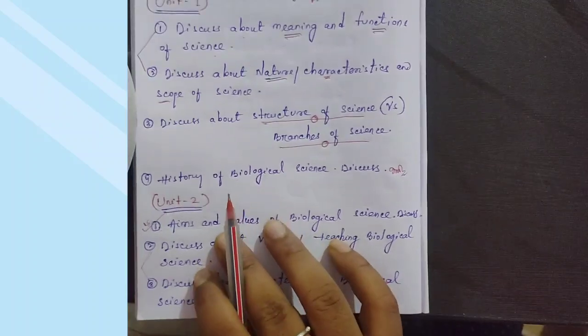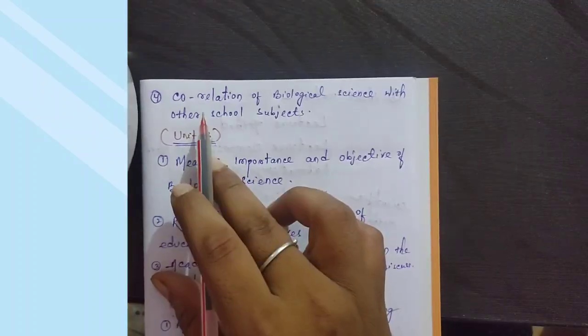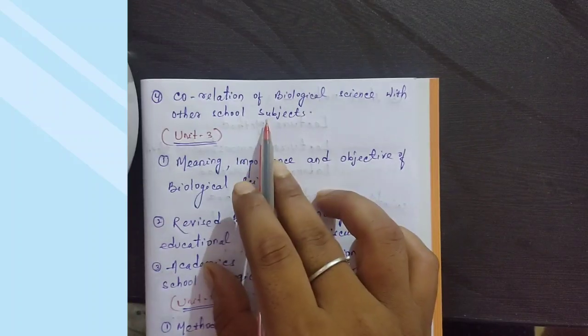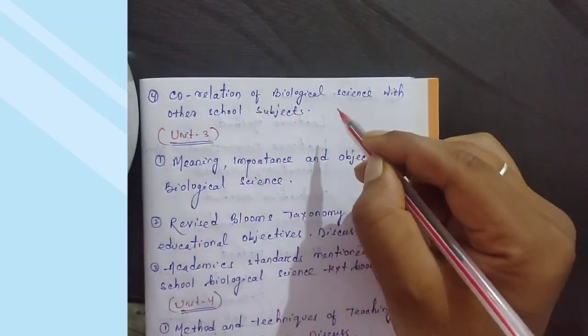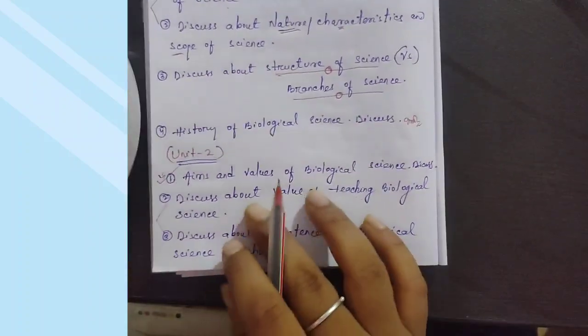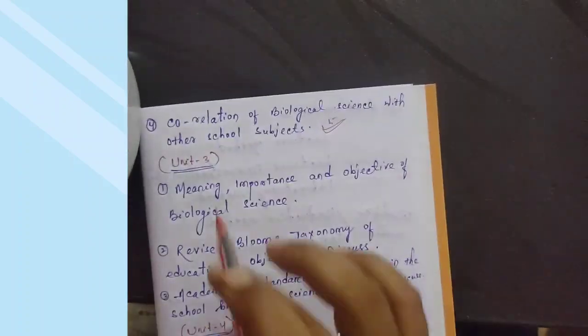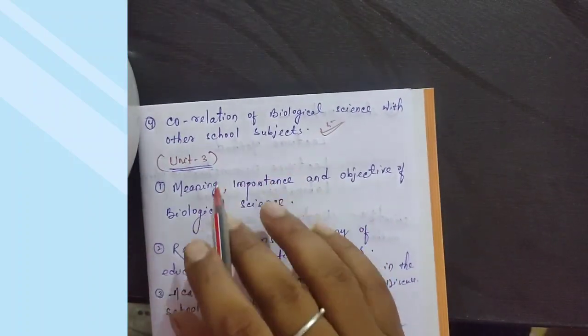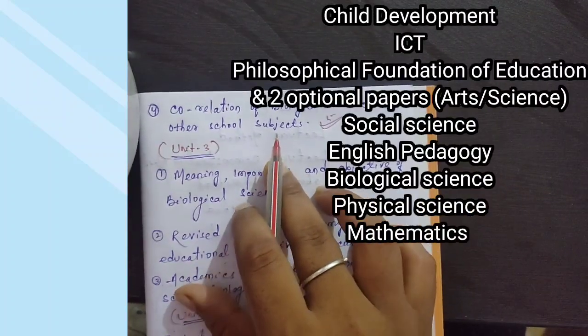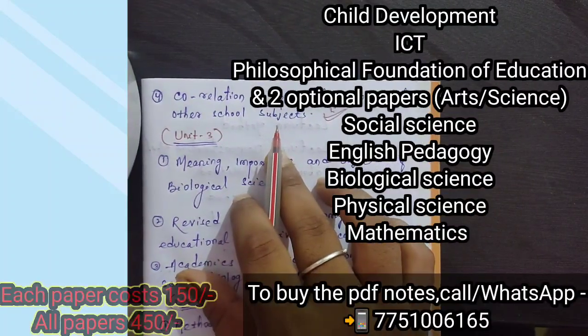Unit 3 content: Correlation of biological science with other school subjects. You could be asked for short notes on correlation. Question number one is the lead question. Most importantly, the PDF is available. For those who already know about it...